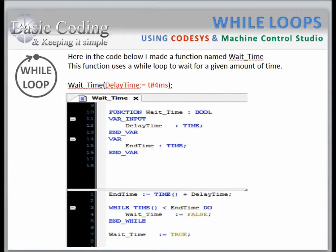Here is another example of how you might use a while loop. In this code below, I'm using a while loop to produce a small delay. This while loop is in a function called WaitTime. As you can see by the name here, WaitTime returns a type boolean. It has one input and the input variable is called DelayTime. This variable is of type TIME.